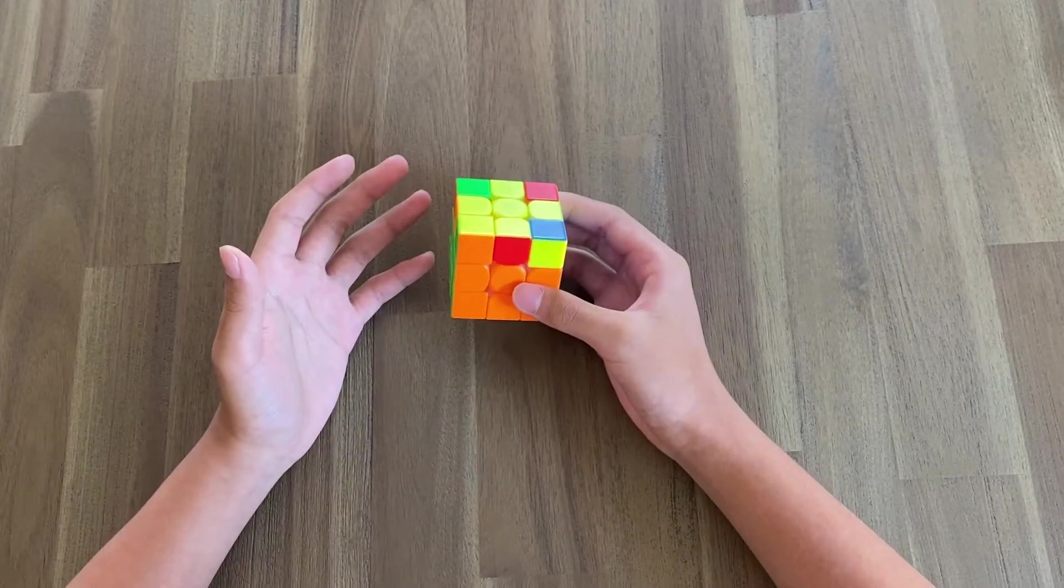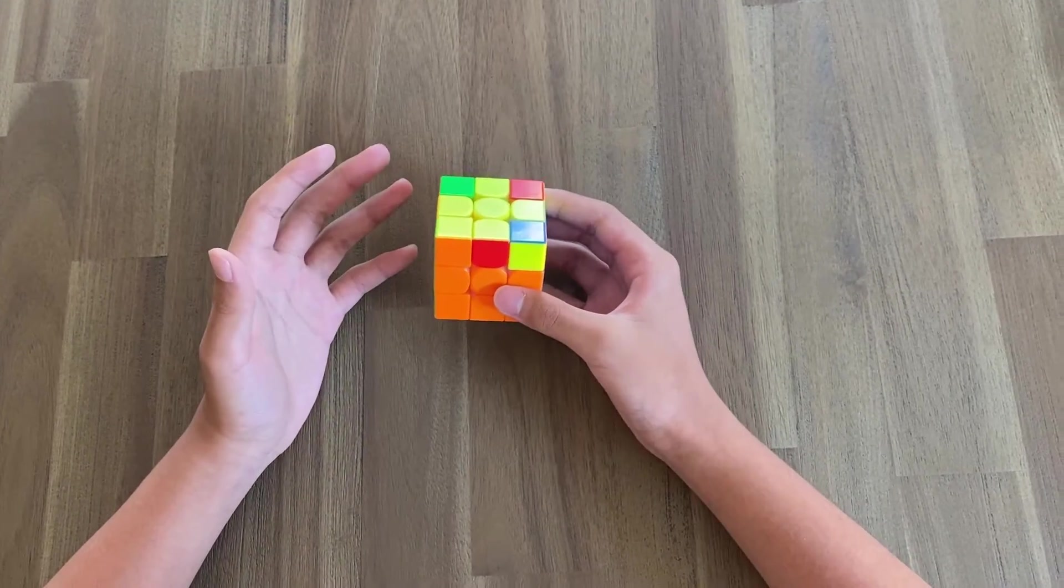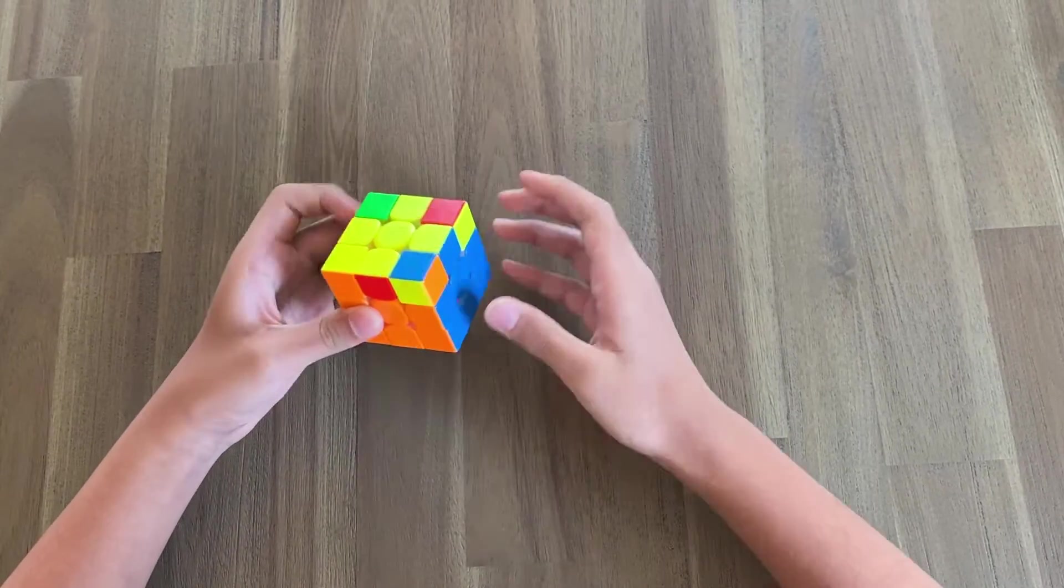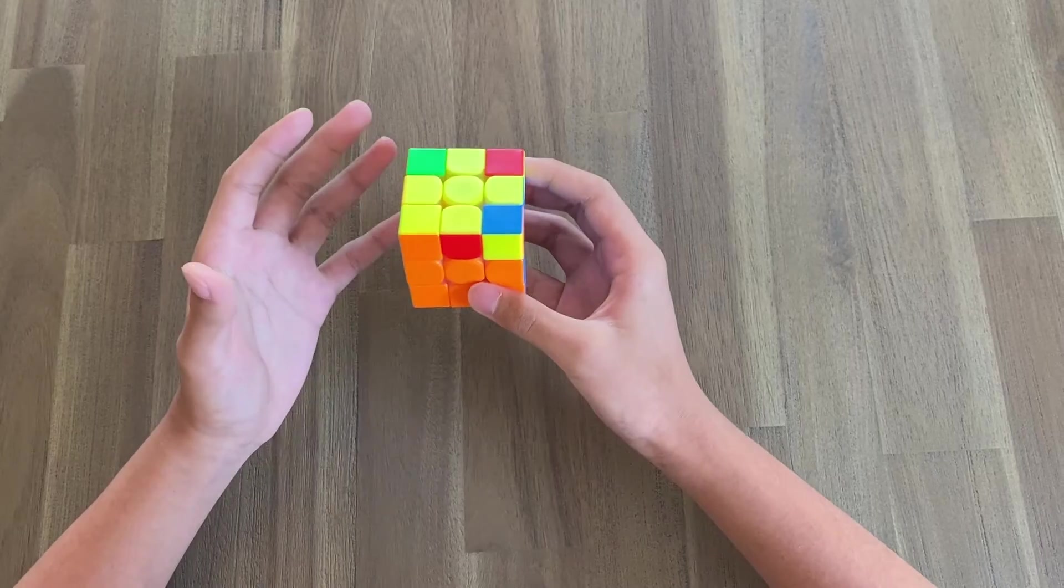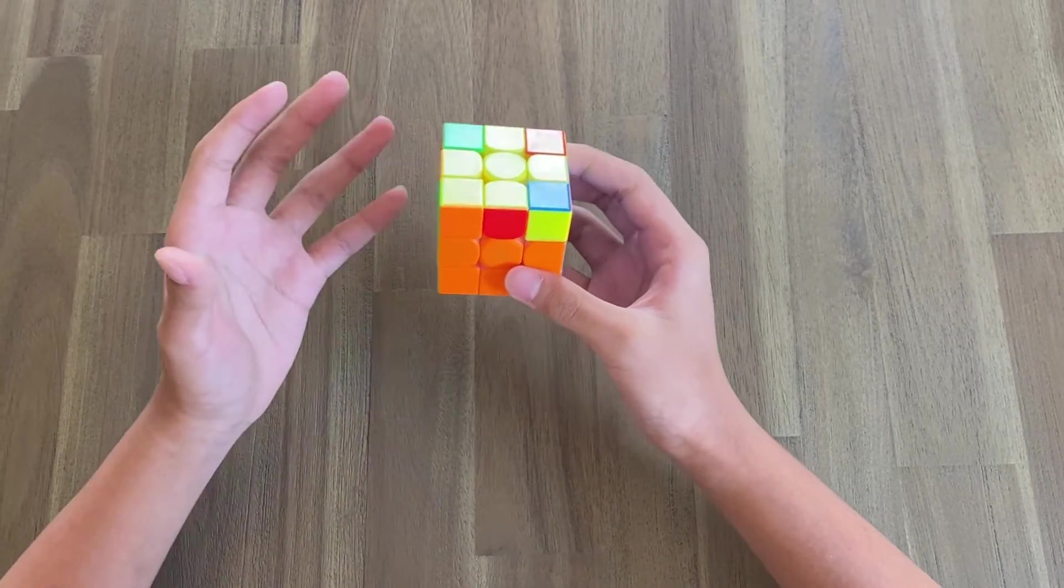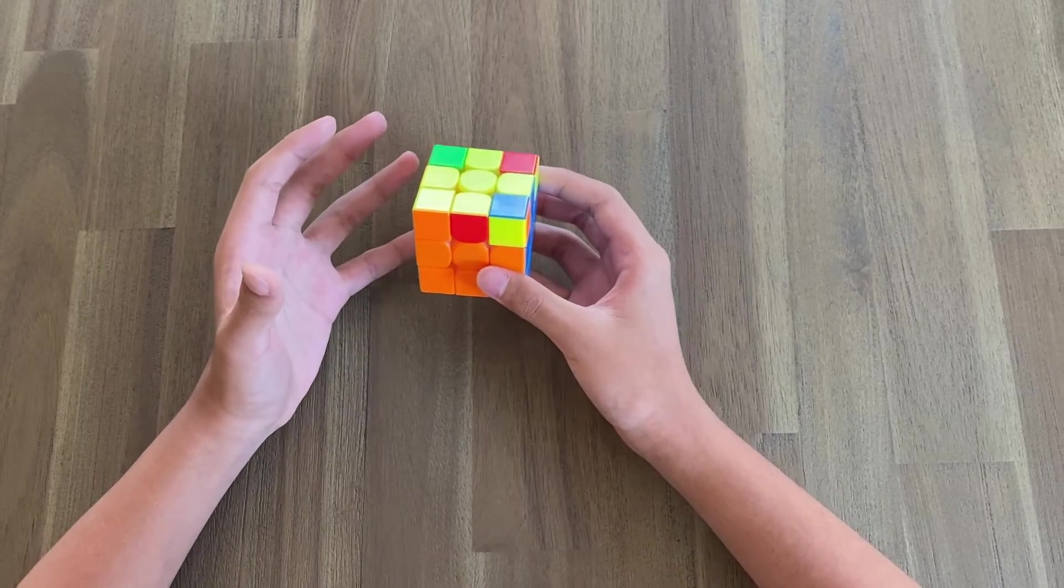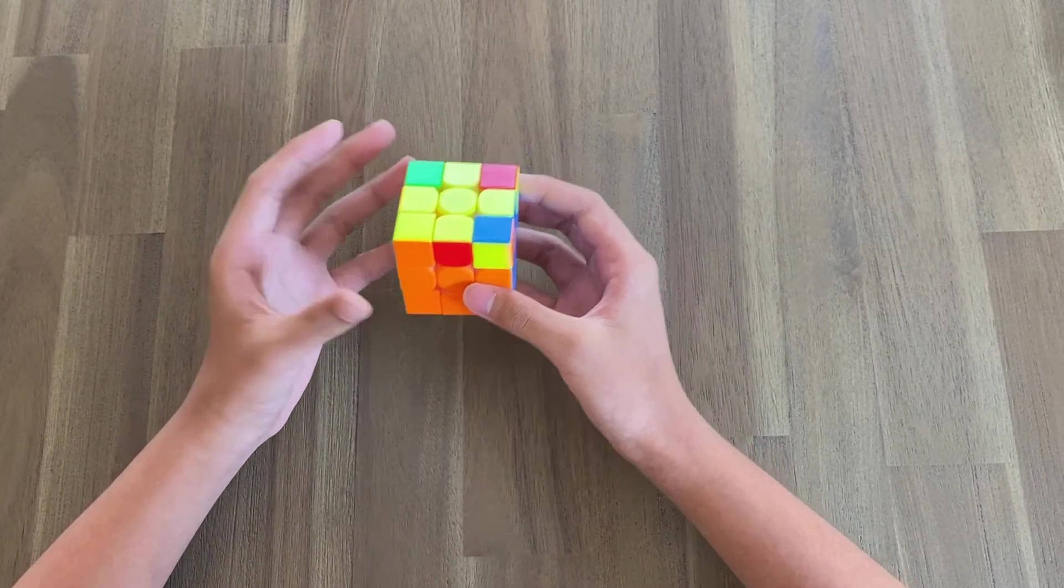And when you have a super high TPS, it's usually very hard to do look ahead because your hands are moving so fast that it's almost blurry. So usually you want to slow down in order to have better look ahead. And you can practice to get that TPS higher while still retaining your look ahead.